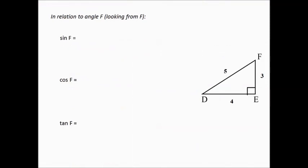Let's do it looking from angle F. This time, circle angle F and figure out where the sides are. Now, without even knowing where we're looking from, remember, use the right angle to first label the hypotenuse.